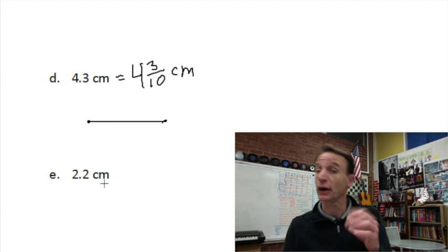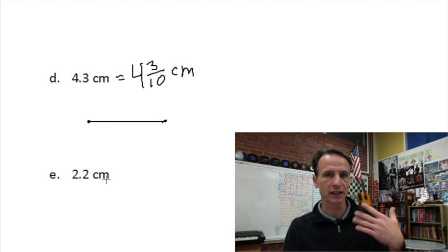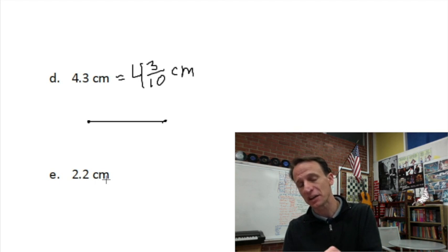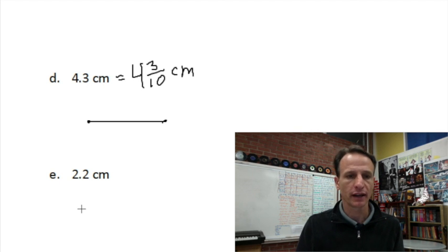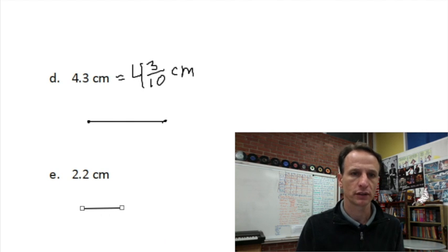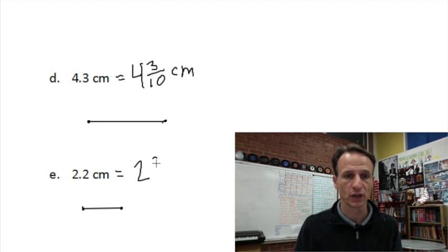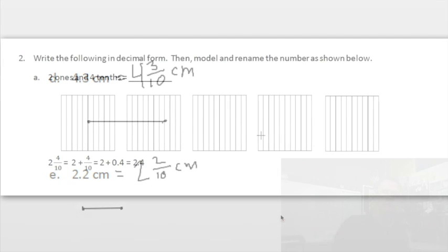By the way, we don't say 'two point two' unless we're talking about how you write it. When reading it as a number, it should be two and two tenths centimeters. Drawing the line — dots at each end to make it a line segment. Two and two tenths as a mixed number is simply two and two tenths centimeters. Beautiful — let's go on to number two.